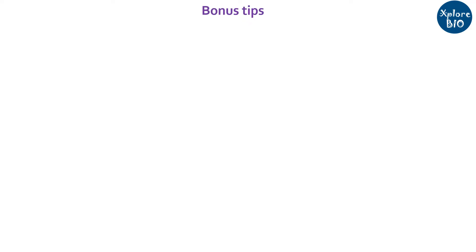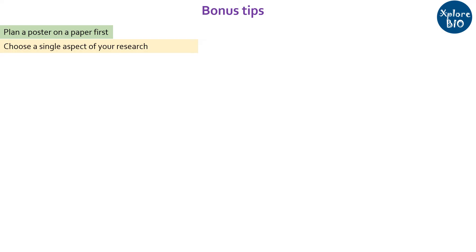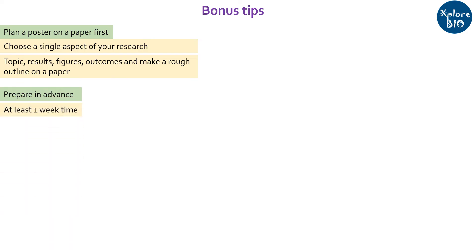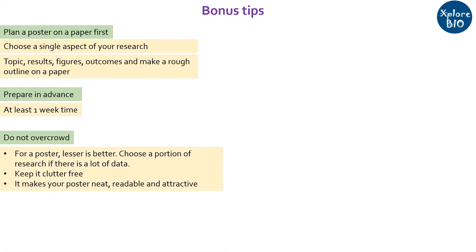Now for some bonus tips. Before making a poster using software, make a draft outline on paper. Focus on just a single aspect of your research — this makes it easy for the audience to understand what your poster is about. Frame your title accordingly, write the background, and include relevant results, figures, tables, and key takeaway messages. Making a great poster takes time, so devote at least one week to it. Make a poster that is clutter-free and less crowded, with minimal text, and ensure it is easily readable, understandable, and attractive to grab the audience's attention.